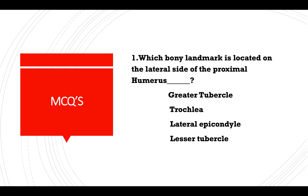MCQ: Which bony landmark is located on the lateral side of the proximal humerus — greater tubercle, trochlea, lateral epicondyle, or lesser tubercle? Answer: Greater tubercle.